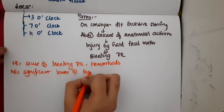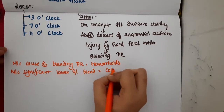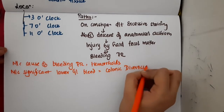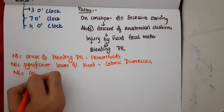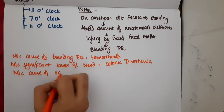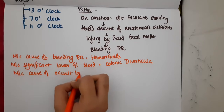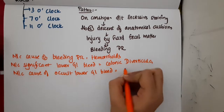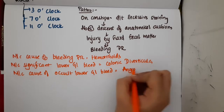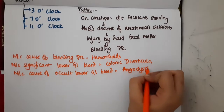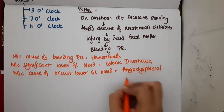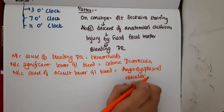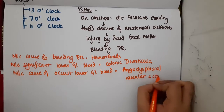The most common significant lower GI bleeding is colonic diverticula. The most common cause of occult lower GI bleed is angiodysplasia, also known as vascular ectasia.